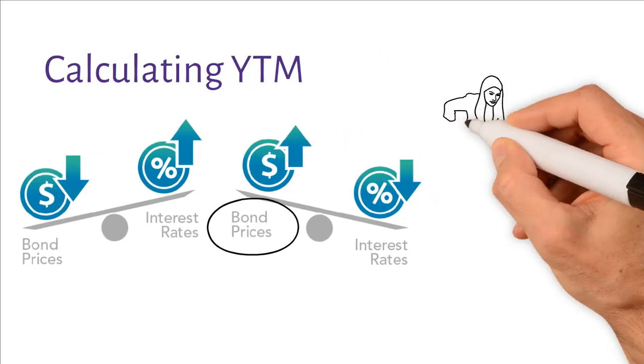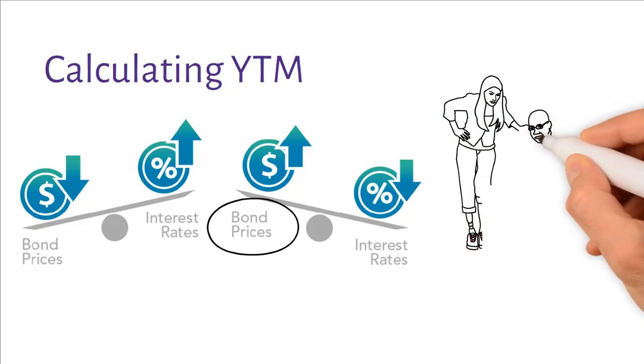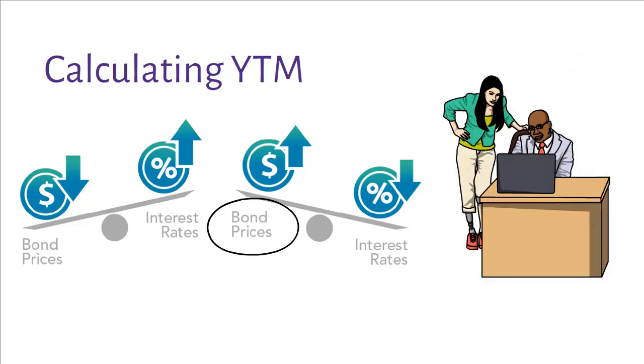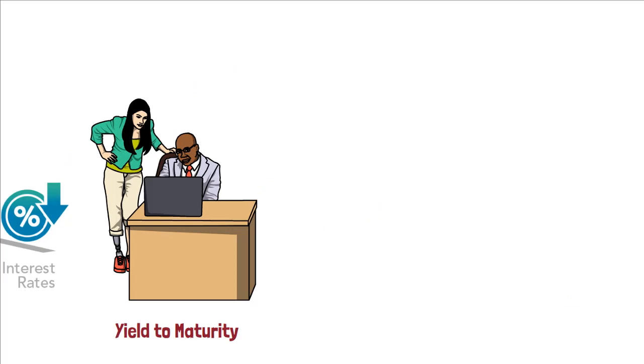A bond's YTM or yield to maturity is the rate of return earned on a bond if it is held to maturity. To understand how YTM is calculated, let us solve a simple problem.